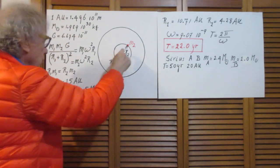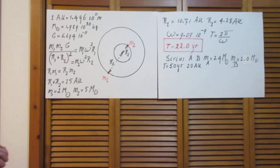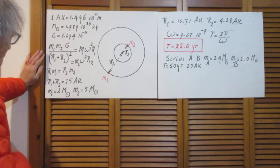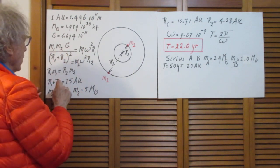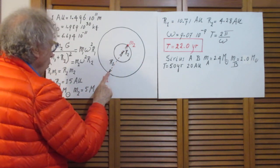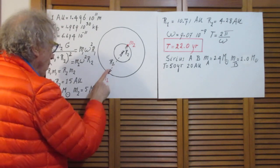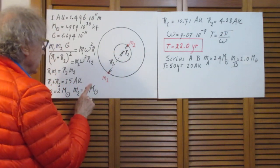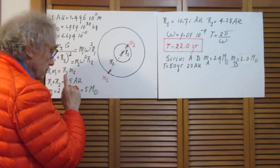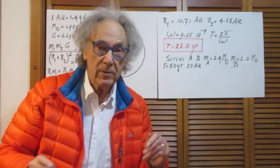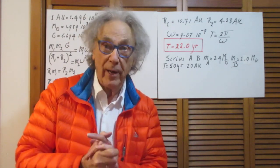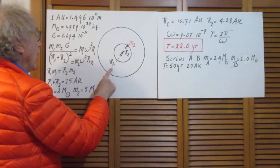R1 times M1 must equal R2 times M2, because the center of mass is determined that way and cannot move. So this is a key equation. The force exerted on M1 must be the centripetal force on M1 to keep it in orbit with radius R1. That centripetal force is M1 omega squared R. If you forgot about that, you may want to brush up on that. It's also Mv squared divided by R, but V is omega R, therefore it's also M omega squared R. So it is M1 omega squared R1 for this one.